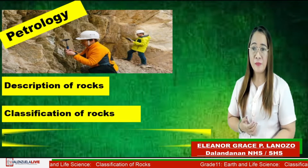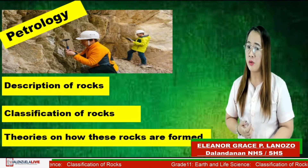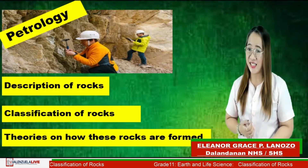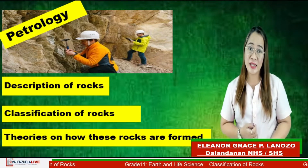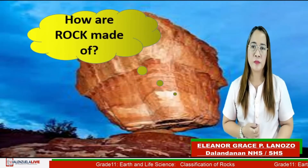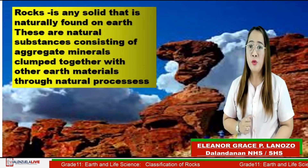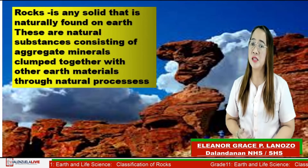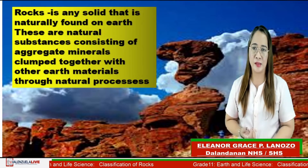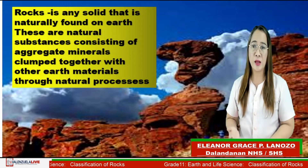It also described the classification of rocks and the theories on how these rocks are formed. Very interesting, isn't it? Now, let's find out what are the three classifications of rocks. Rock is any solid that is naturally found on Earth — natural substances consisting of aggregate minerals clumped together with other earth materials from natural processes.